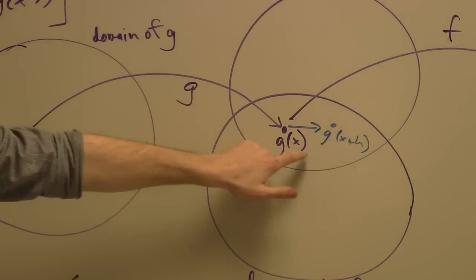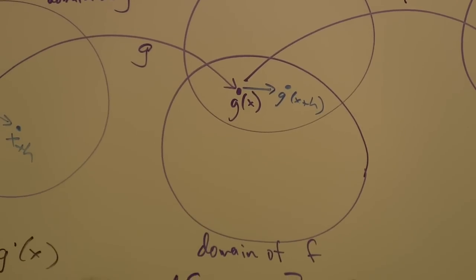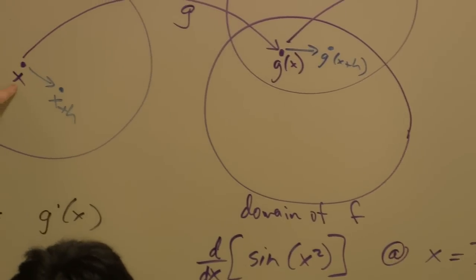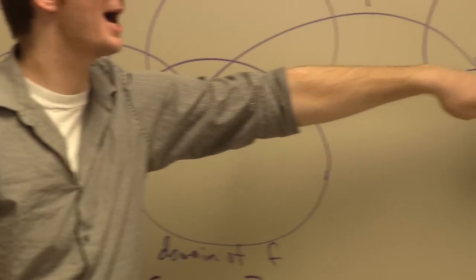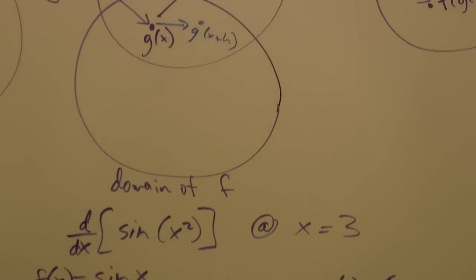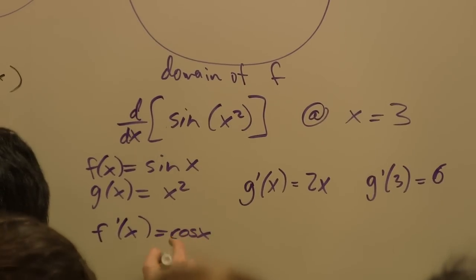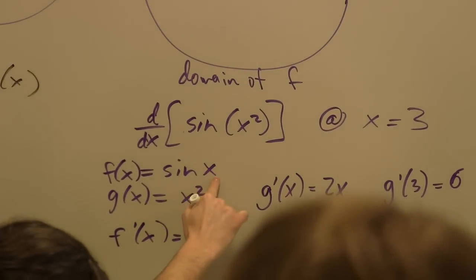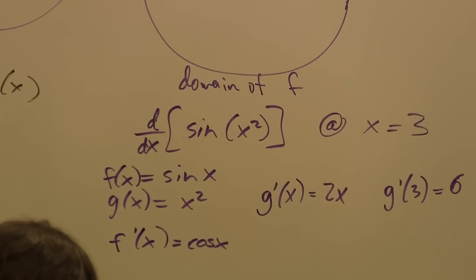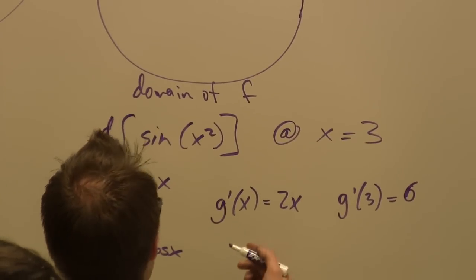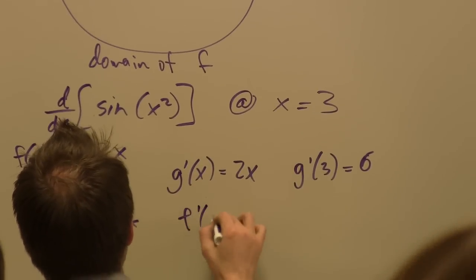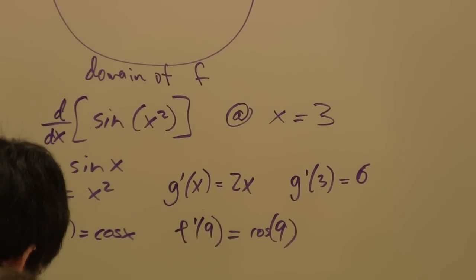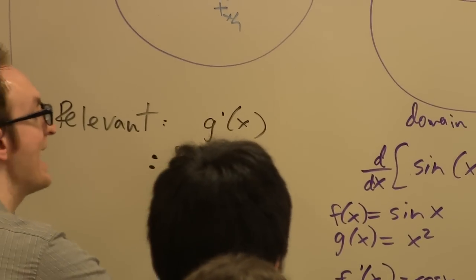But what number do I plug into the sine function? Not 3, and not 6 either. Three turns into 9, and then 9 gets plugged into sine. So f prime would be cosine — cosine tells me the instantaneous rate of change of sine. But I don't care how fast sine is changing at 3 or at 6; it's at 9 that it matters. So f prime of g of x is cosine of 9. That is the other relevant quantity: the derivative of f at g of x.